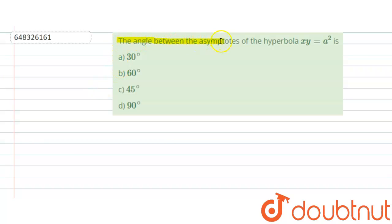The angle between the asymptotes of the hyperbola xy equal to a squared. So we have to find the angle between asymptotes of the hyperbola and the equation is given as xy equal to a squared. Four options are given, we have to choose the correct one.